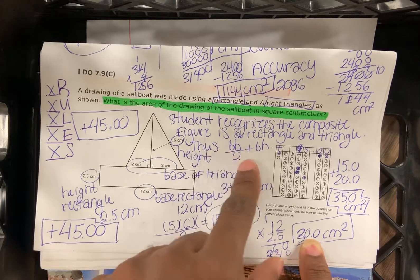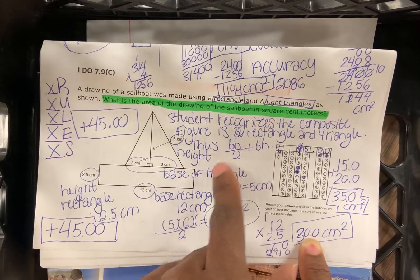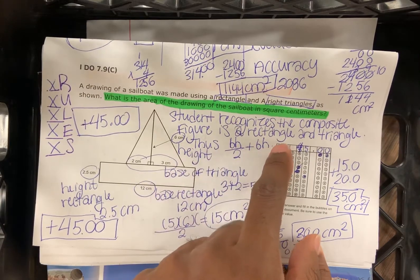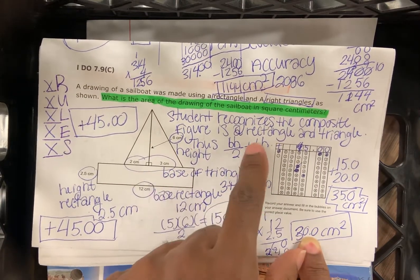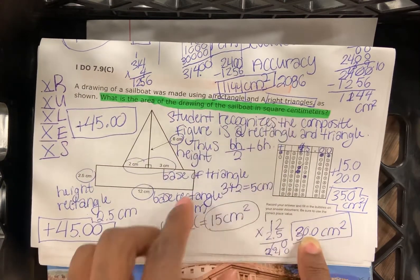Now the area of a triangle is going to be base times height divided by two. The area of a rectangle is going to be base times height. So we've got to add the area of the rectangle and the area of the triangles together to find the area of the drawing of the sailboat.